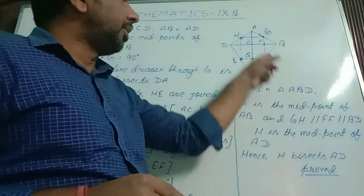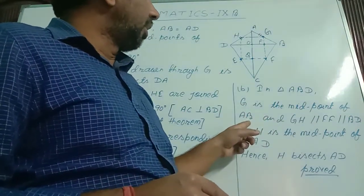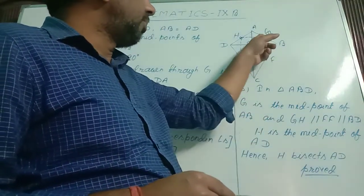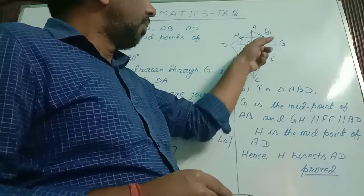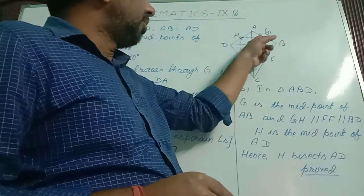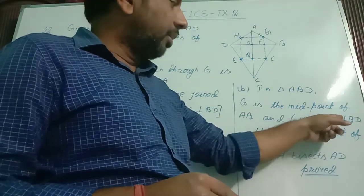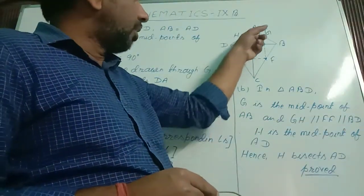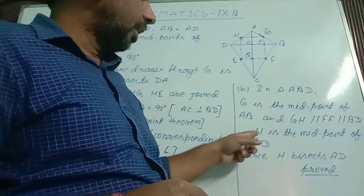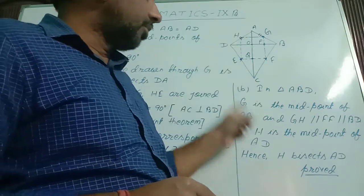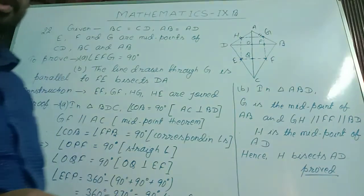For part B, in triangle ABD: G is the midpoint of side AB and GH is parallel to FE. While EF is parallel to BD, therefore GH is also parallel to BD. So GH is parallel to FE is parallel to BD. Therefore H is the midpoint of AD from the converse of midpoint theorem. Therefore H bisects AD — part B is also proved.